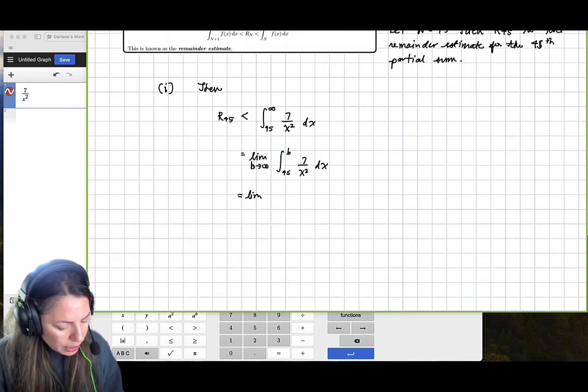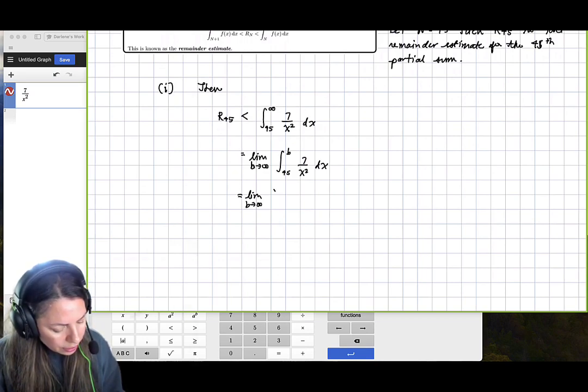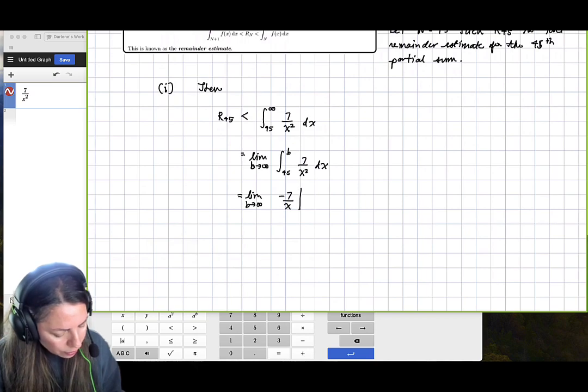So now we have the limit as b goes to infinity of the definite integral, which is going to be, as I integrate, negative 7 over x evaluated from 45 to b.